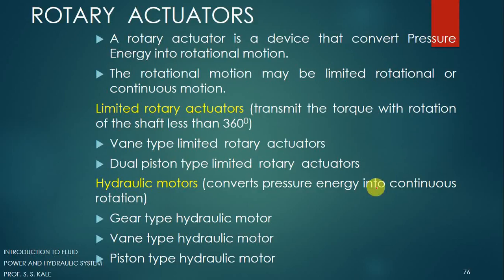Continuous rotary motion. There are some applications where we want only limited motion — some 60 degree, 90 degree, 100 degree, etc. And there are some applications where we want continuous rotary motion, where we want an RPM (revolution per minute) that can be achieved. So these are two types.